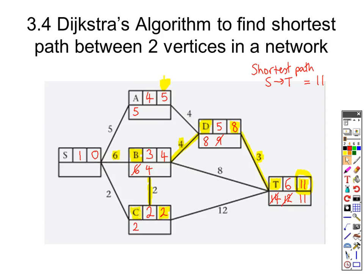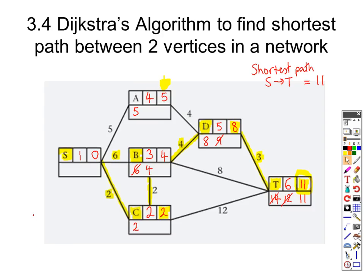We need to go back now from c. There's only one place to go, so we just check it adds up: 2 take away the journey time of 2 gives us 0, so that's back to the start. We can now list the actual journey: it was s to c, to b, to d, to t. That's the journey we took. So that's Dijkstra diagrams.